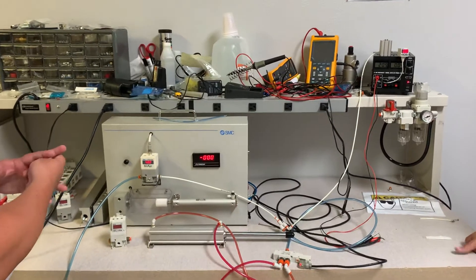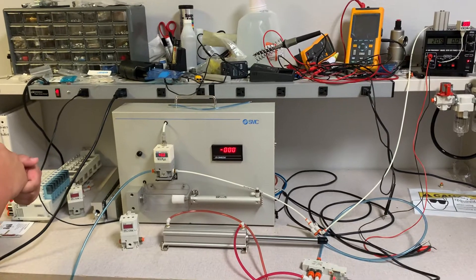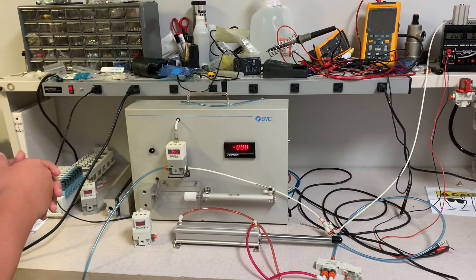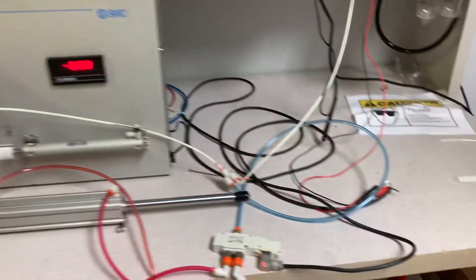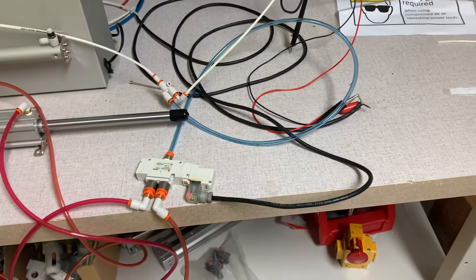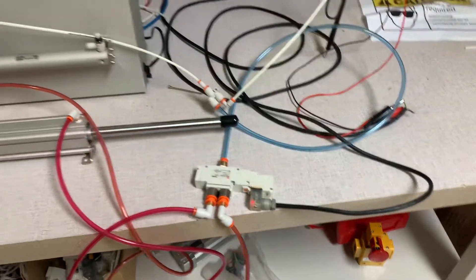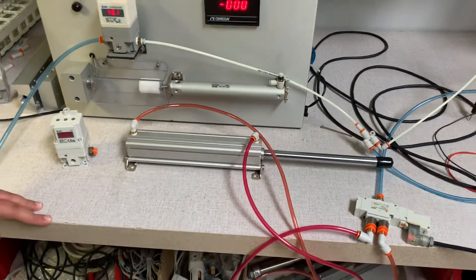This is a demonstration to show how an ITV electroneumatic regulator performs in an event of a power loss. Currently we have a set pressure of 40 psi plumbed to a directional control valve energized, a 5-2 single solenoid feeding a double-acting air cylinder.